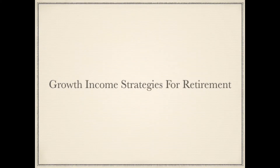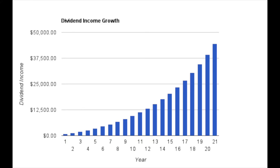For a retirement growth strategy, it's crucial to create and maintain a well diversified portfolio. Diversification across sectors, asset class, regional, and market cap are key to mitigate risk and maximize growth potential in your portfolio. Adding dividend income to your strategy provides extra income that can be used to compensate your living or discretionary expenses without having to tap into your retirement investments.